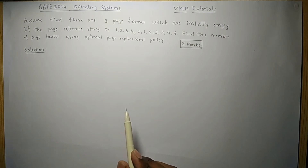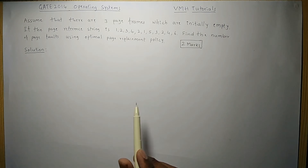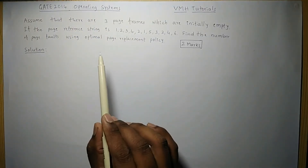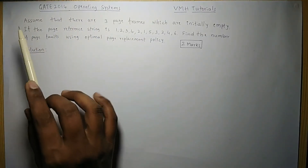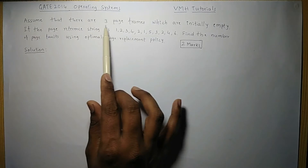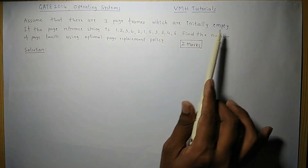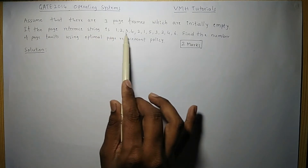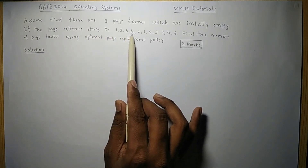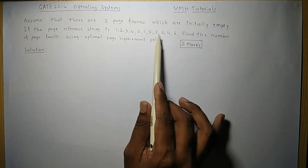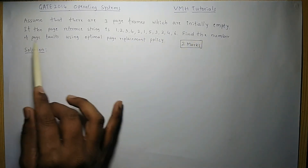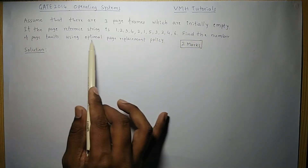Hello friends, today we will solve a problem on operating systems which was asked in GATE 2014 for two marks. The problem definition is: assume that there are three page frames which are initially empty. If the page reference string is 1, 2, 3, 4, 2, 1, 5, 3, 2, 4, 6, find the number of page faults using the optimal page replacement policy.